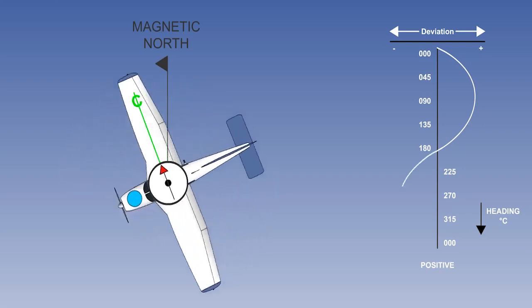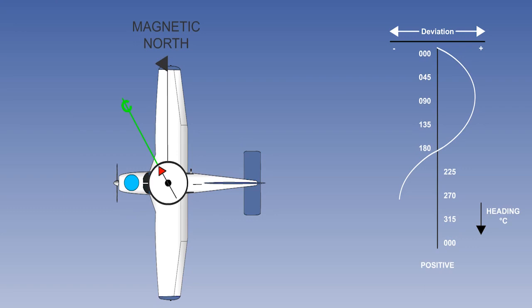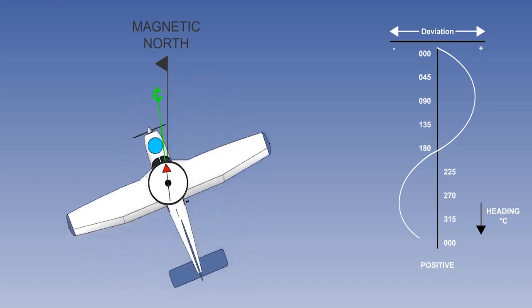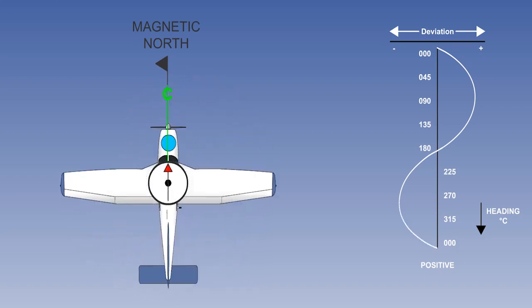Continuing the turn, deviation now becomes westerly, increasing to a maximum on a compass heading of 270 degrees, before reducing back to zero on magnetic north. Looking at the graph, we can say that the contribution to deviation from longitudinal aircraft magnetism is a function of the sine of the heading. The combined longitudinal hard and soft-iron component of aircraft magnetism is known as coefficient B.